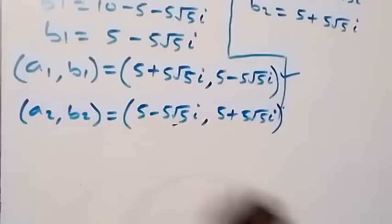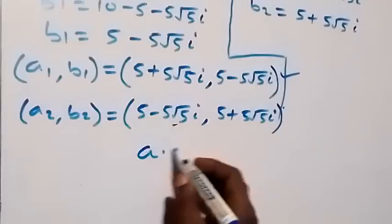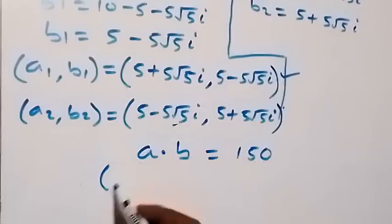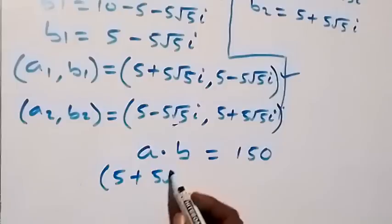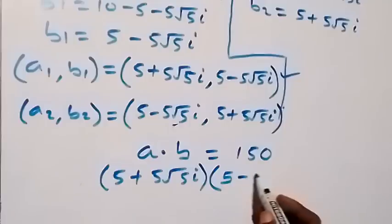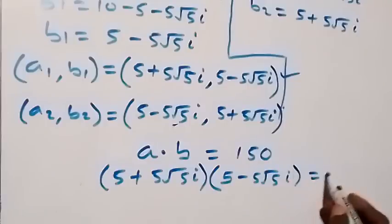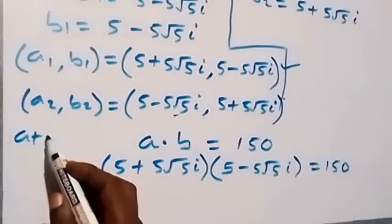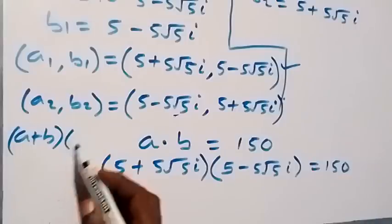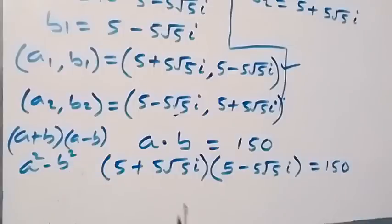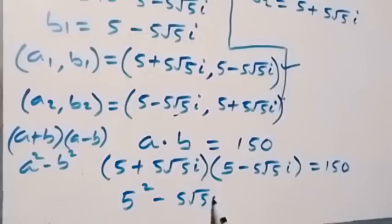For equation 2, A times B equals 150. We have (5 plus 5·root(5)·i) times (5 minus 5·root(5)·i). This is of the form (a + b)(a − b) equals a squared minus b squared, so we write it as 5 squared minus (5·root(5)·i) squared.